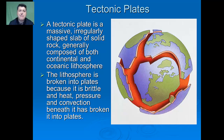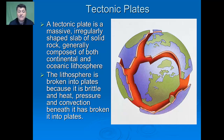Tectonic plates are massive, irregularly shaped slabs of solid rock that are typically composed of both continental and oceanic lithosphere. The lithosphere is broken into plates because it's somewhat brittle, broken as a result of pressure and convection happening underneath the lithosphere.